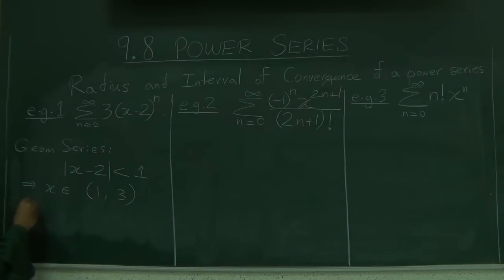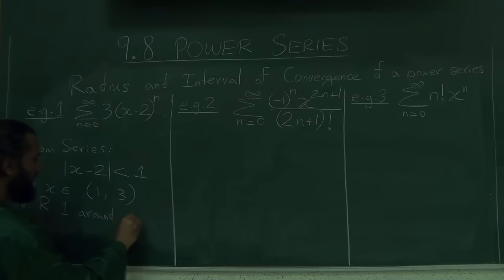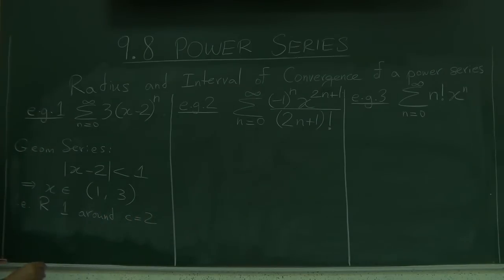I.e. radius 1 around c equal 2. Okay? So if you're in here, the series will converge to a finite value. If you're outside this interval, this function does not give you a value. So this function is undefined there. So its domain is only this. Now, we talked, the theorem does not mention anything but the end points. So you still have to check the end points.